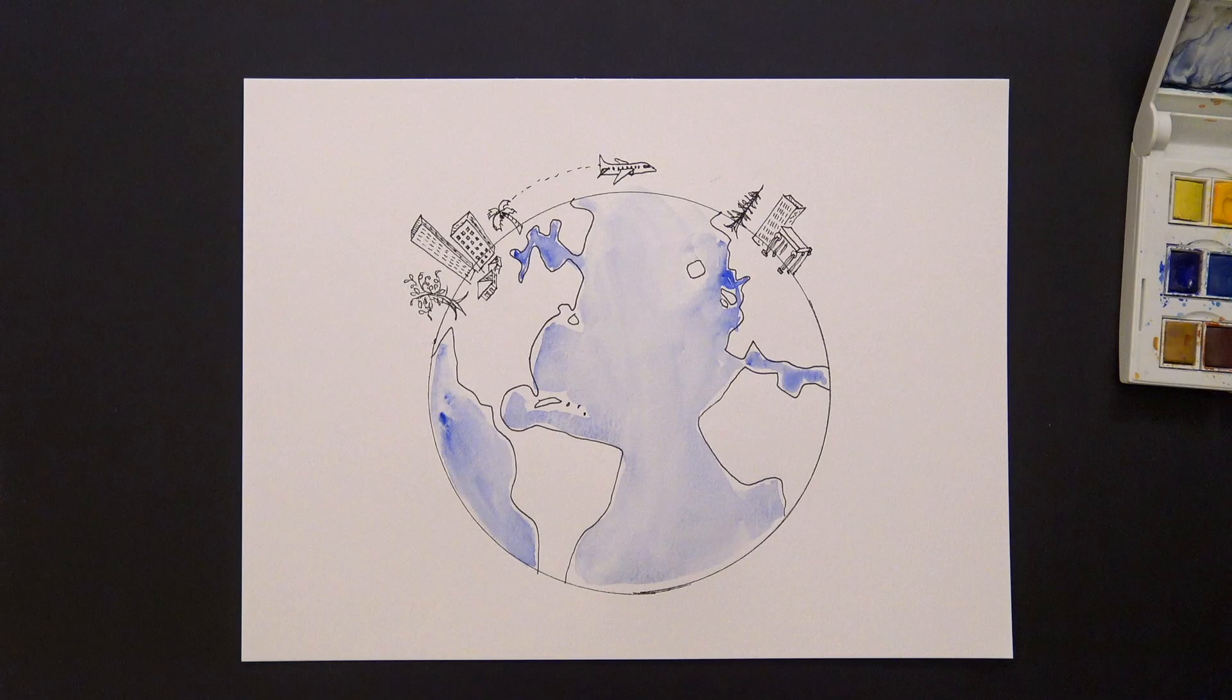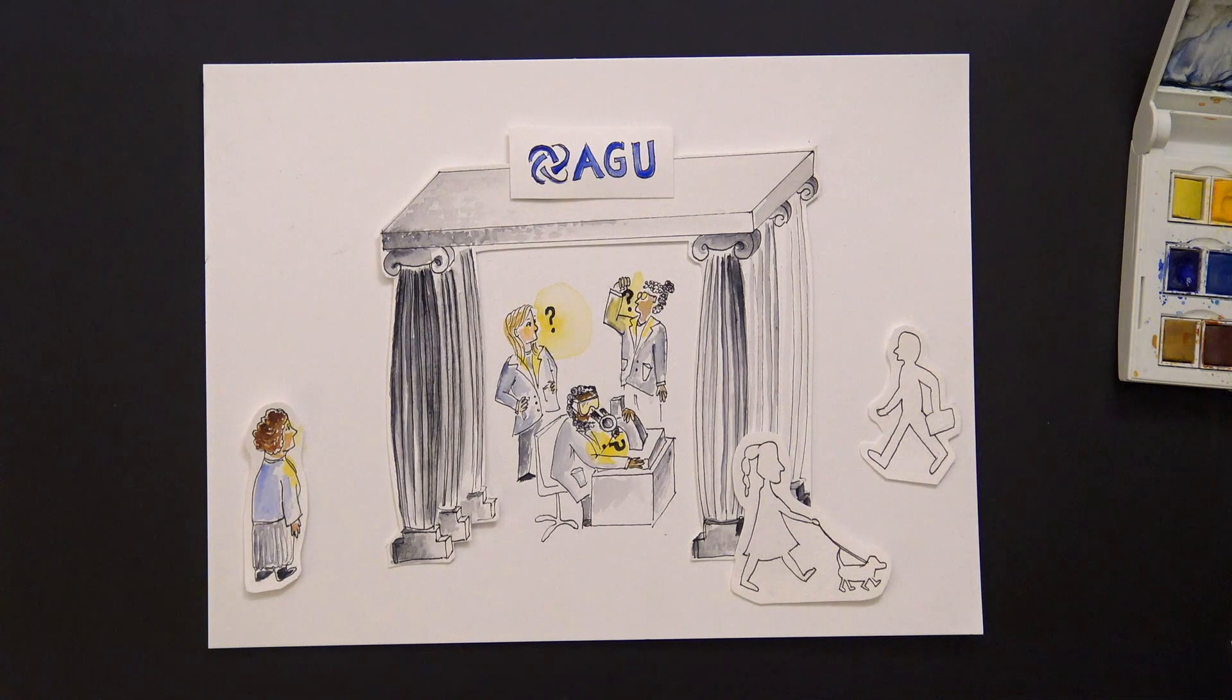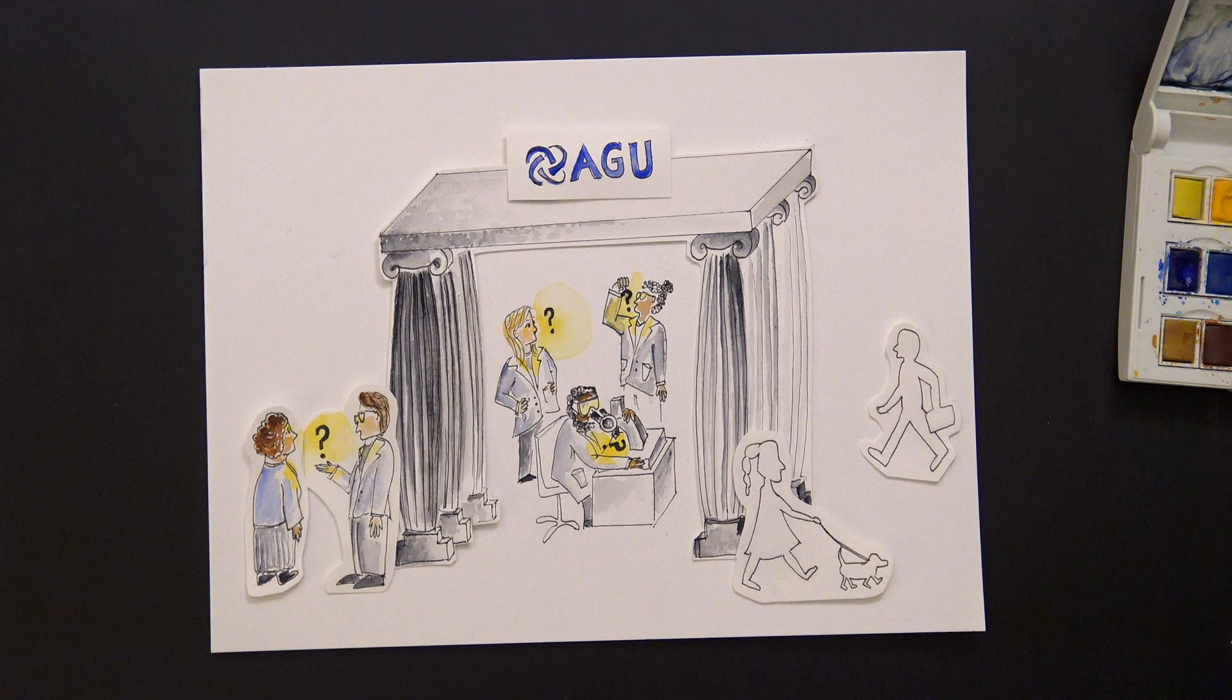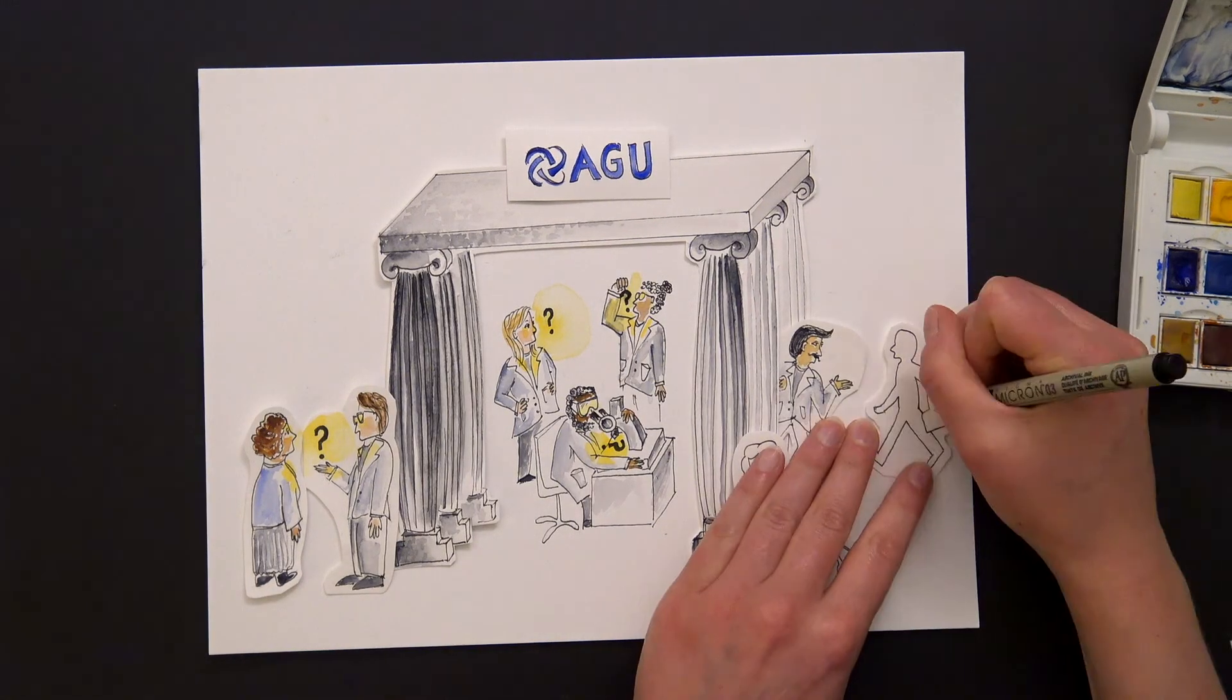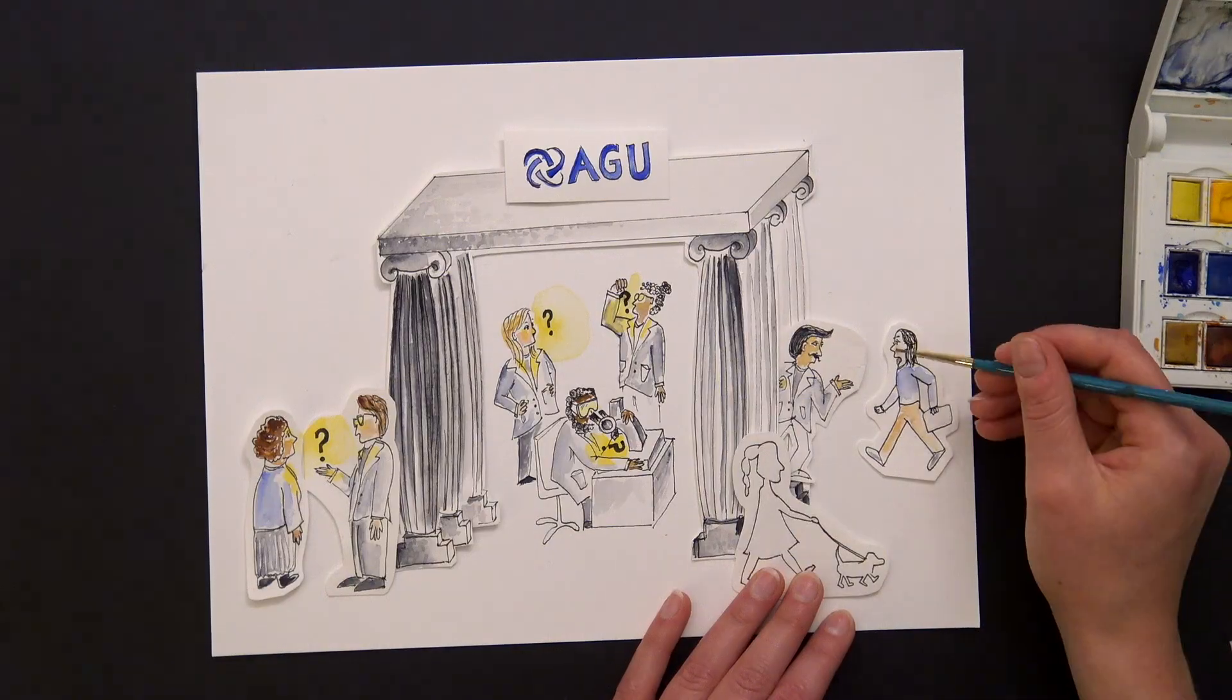If the American Geophysical Union is any indication, more Earth scientists than ever before are doing their research in collaboration with non-researchers, who have expertise in what kinds of knowledge is needed, who have a stake in research outcomes, and who can use the science to inform decisions and actions.